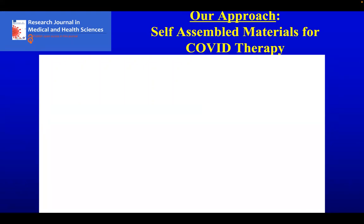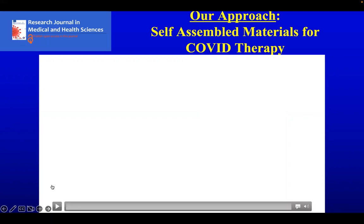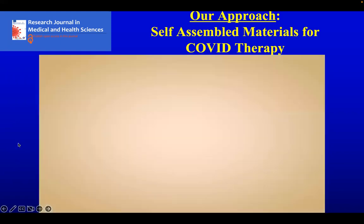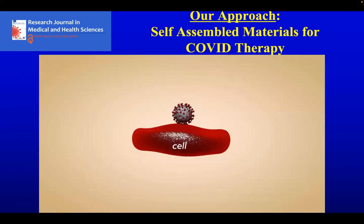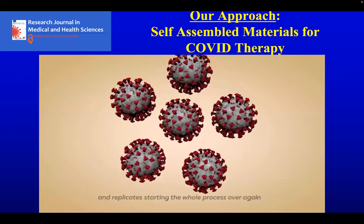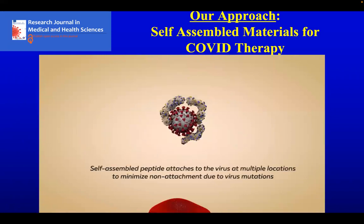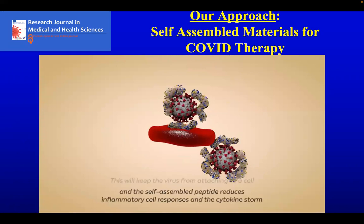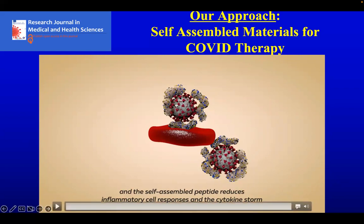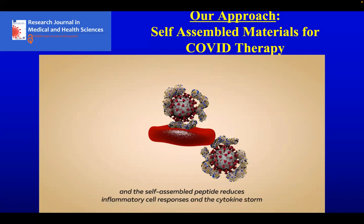If I haven't been clear about how we are developing self-assembled materials that can wrap around the virus, keeping it from infecting cells and replicating — here's a quick video highlighting this in cartoon fashion. The self-assembled nanomolecule can attach to the virus surface protein, which would keep the virus from attaching to a cell, entering the cell, and replicating. The approach is simple: we design our self-assembled material to attach to the virus and block it from going into a cell and replicating, which is the natural way a virus spreads.